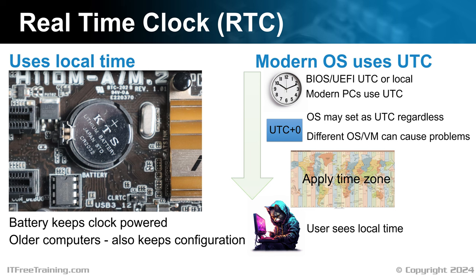This distinction usually doesn't cause issues within a single OS environment. However, when multiple operating systems or virtual machines are in use on the same hardware, it's crucial for all systems to have a consistent approach to handling time. They must all agree on whether to interpret the hardware clock as UTC or as local time. Ideally, you should not encounter issues with varying time displays when switching between operating systems. However, if you notice that the local time fluctuates each time you switch, it is likely due to those systems interpreting the computer's base time differently — one might be using UTC and the other local time.